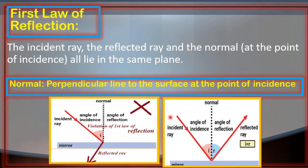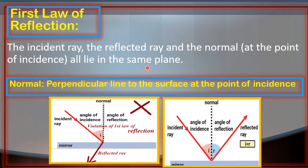So पहले Laws of Reflection को describe करने से पहले हम in terms को describe करते हैं. Incident Ray वो है जो Bulb से आके इस point पे टकराई. Reflected Ray वो है जो ray bounce back हुई. Normal basically एक perpendicular line है to the surface at the point of incidence — यानि point of incidence से हमने एक perpendicular draw किया है जिसे हम कहते हैं Normal. So according to First Law of Reflection, the Incident Ray, the Reflected Ray, and the Normal at the point of incidence all lie in the same plane.